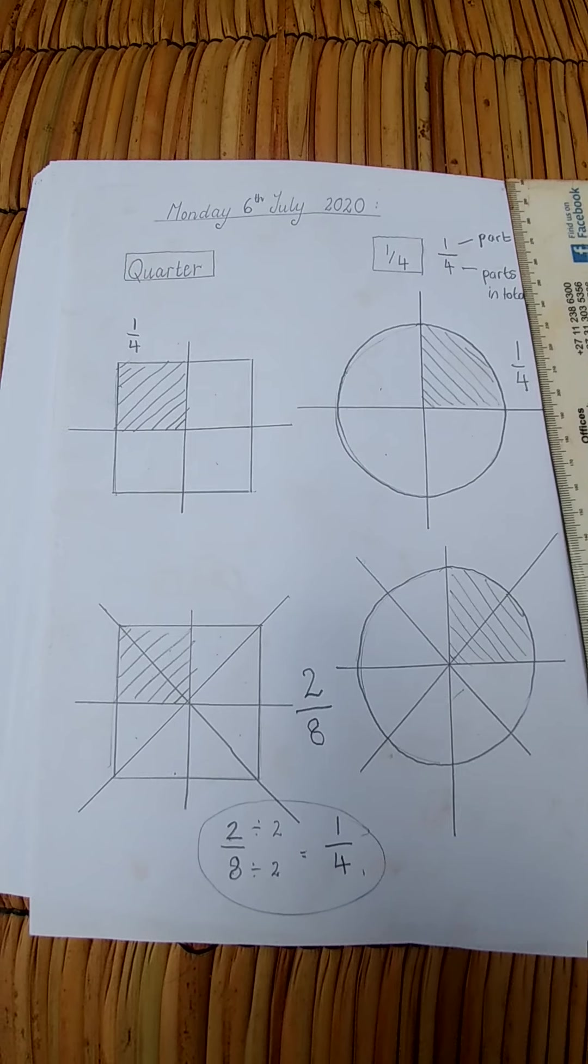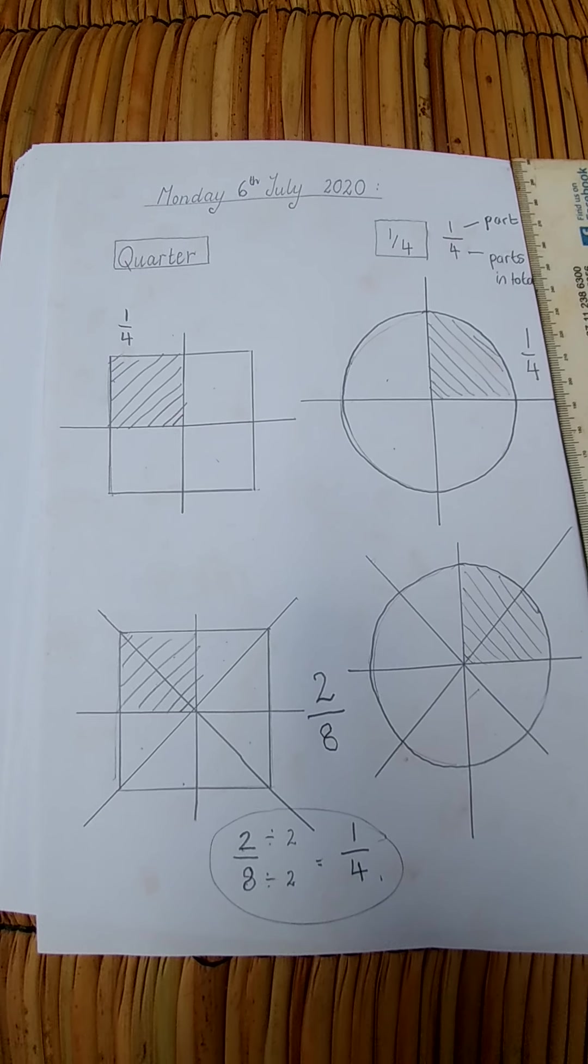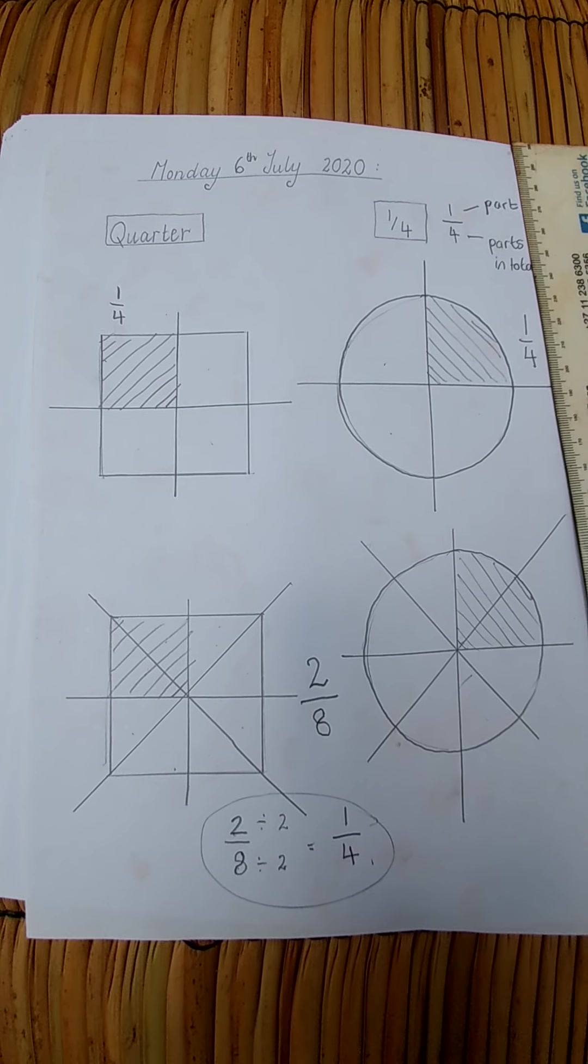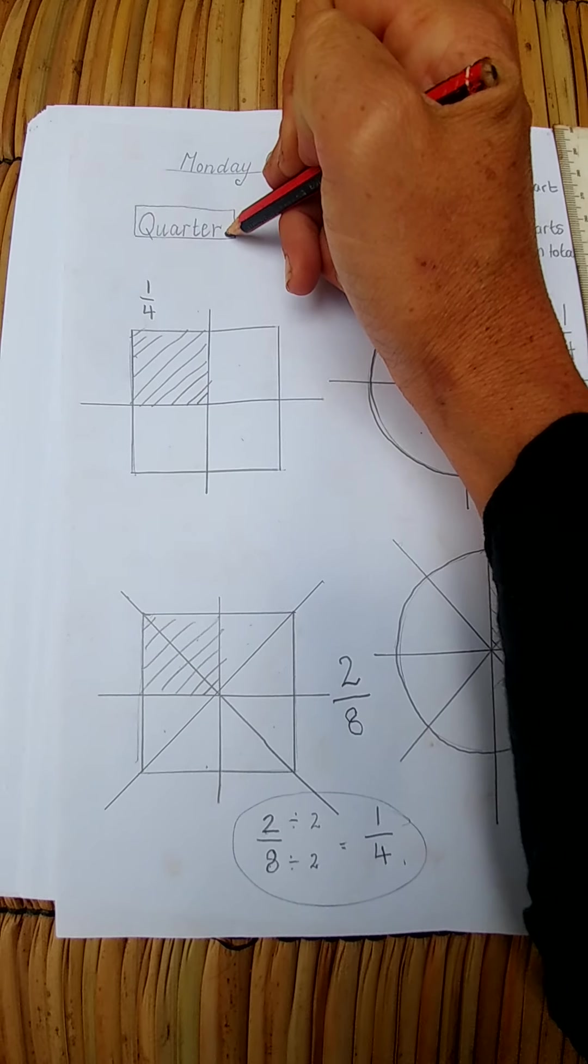Two over eight is the same as a quarter. Hopefully you guys got all of this down in your books, and then tomorrow we'll carry on with some exercises for a quarter.